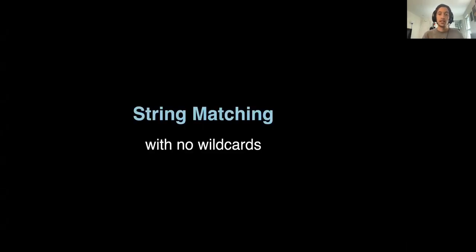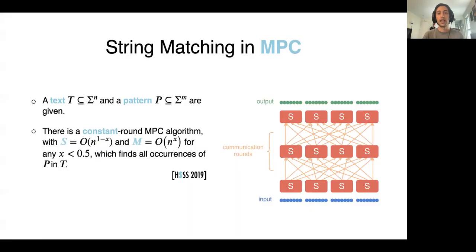But first, we start with the case that there are no wildcard characters. We show that for any constant ε smaller than 1/2, we can give a constant round algorithm that finds all occurrences of P in T.